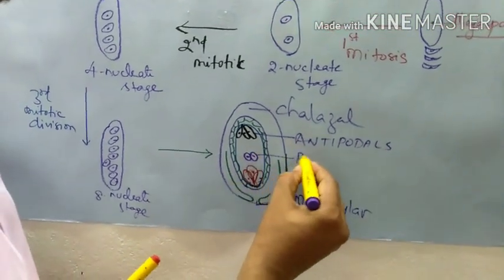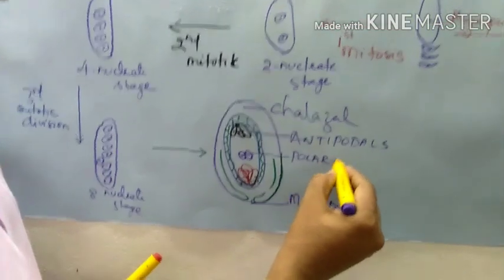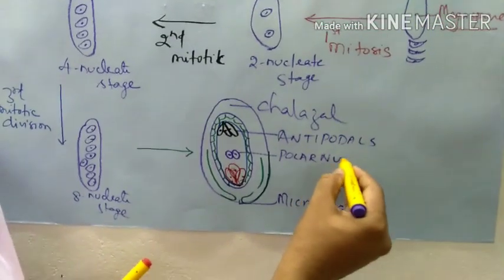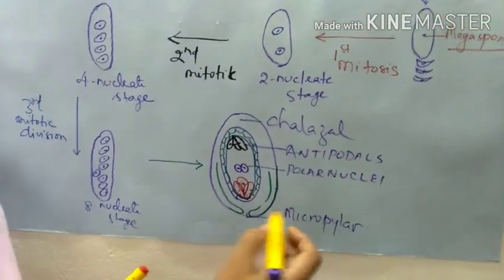And the center cells are there — they are called as polar nuclei.